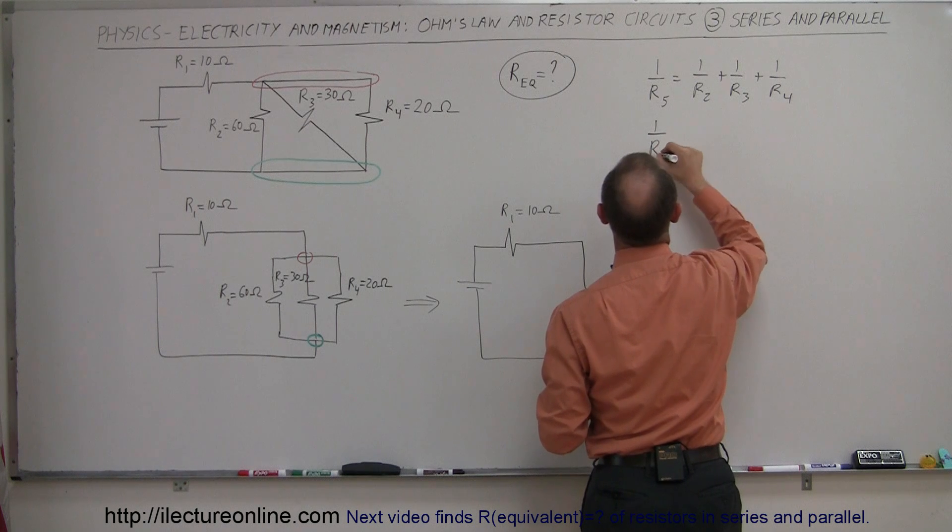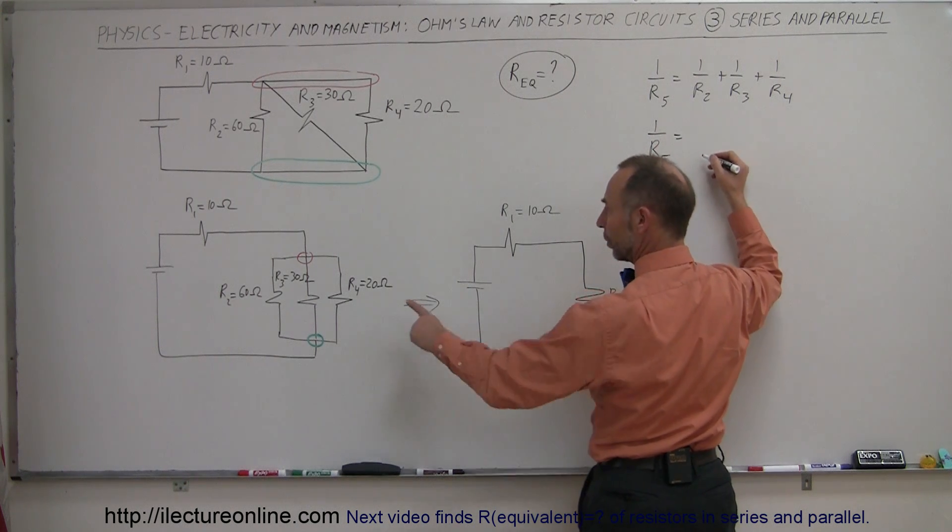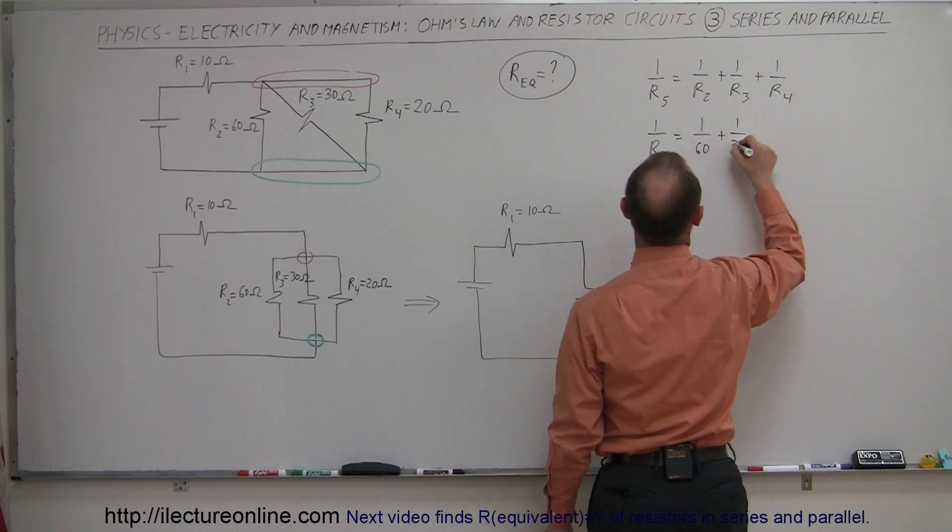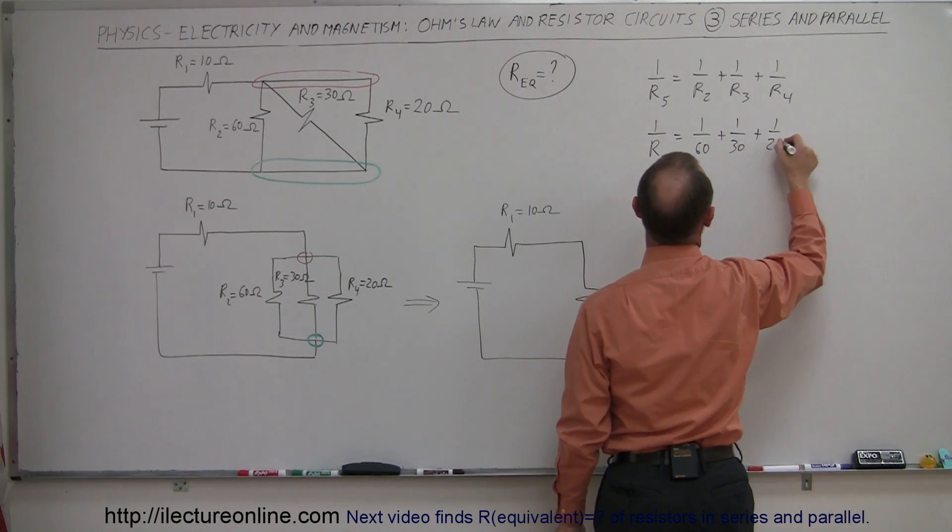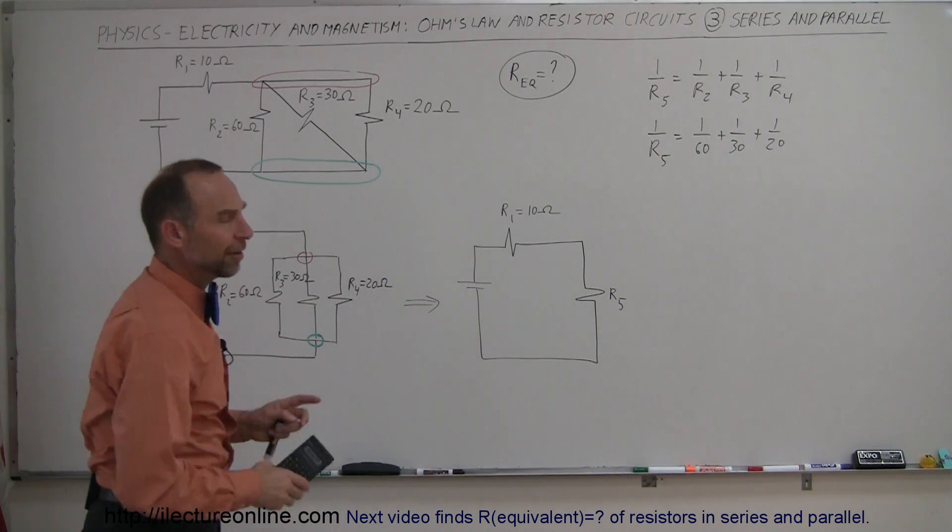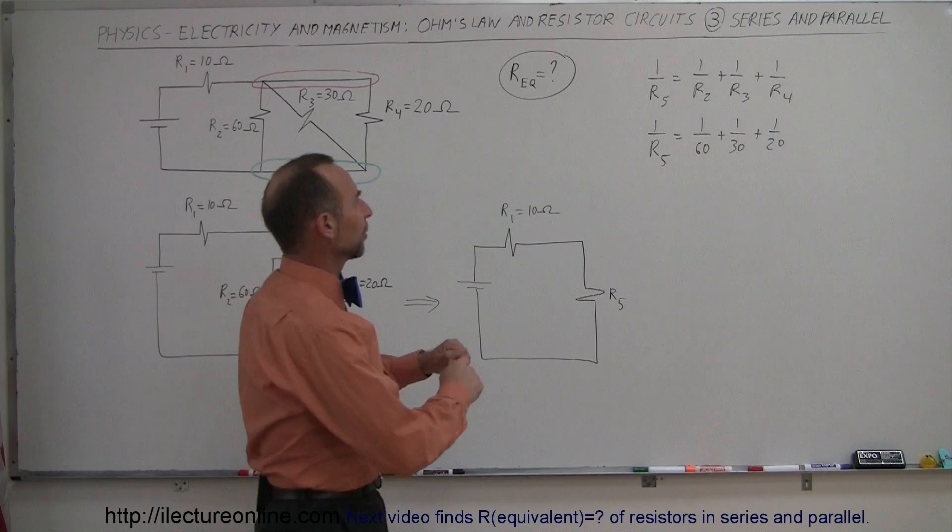And so 1 over R5 is equal to 1 over 60, plus 1 over 30, plus 1 over 20. Now we get our calculator. And matter of fact, you know we don't even need a calculator for this one.